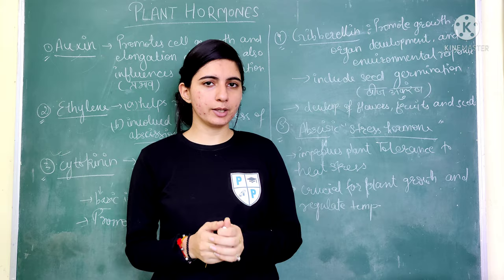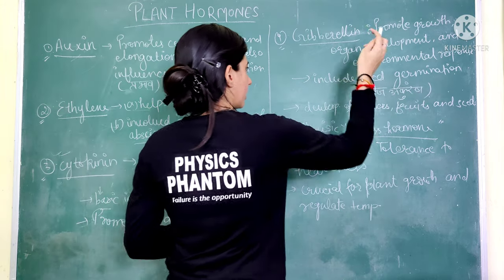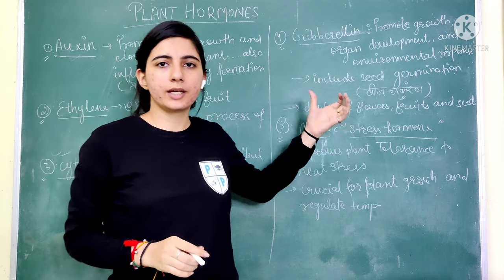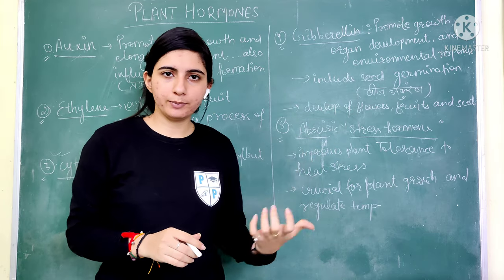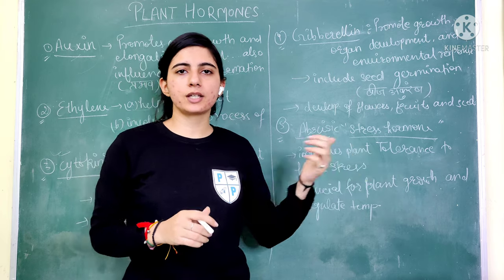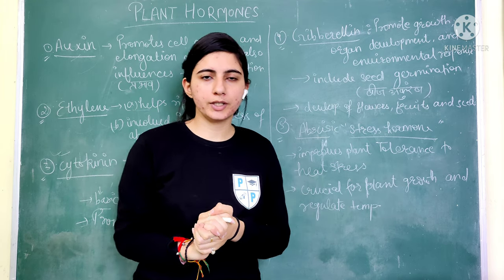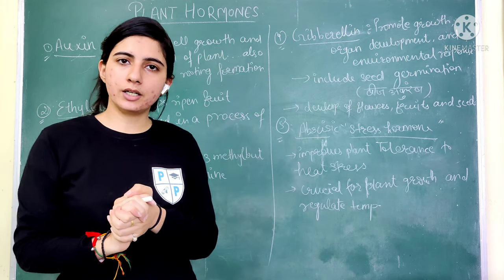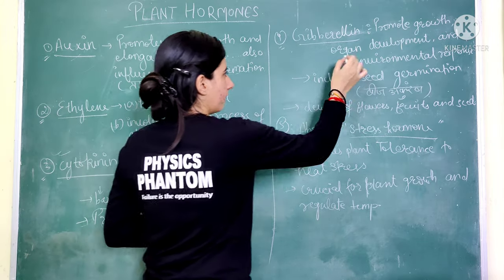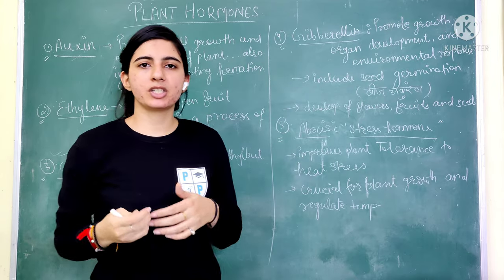The next hormone is Gibberellin. Gibberellin has many uses. What does the gibberellin hormone do? It promotes growth and is helpful in organ development. Just as our human body has organs like kidney, liver, and heart, plants also have organs: seed, stem, and roots. This hormone, gibberellin, helps in the growth of these organs.